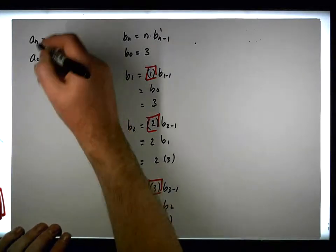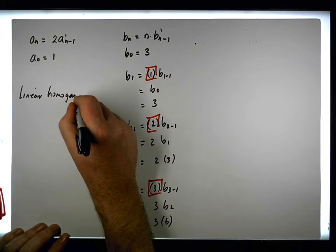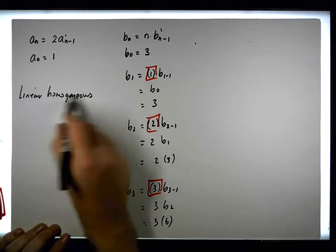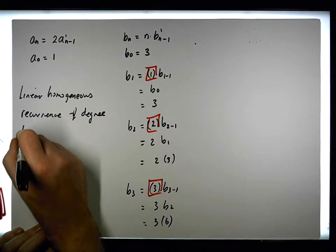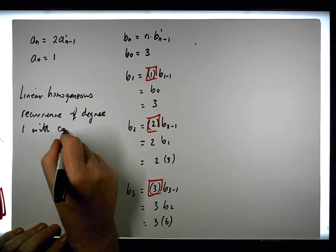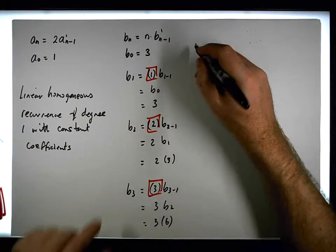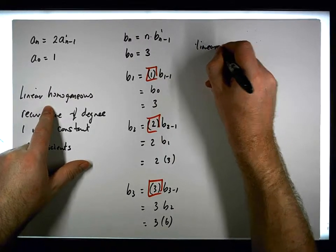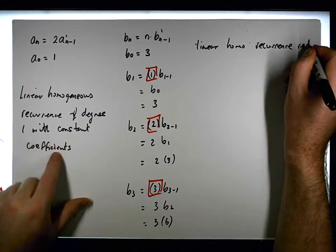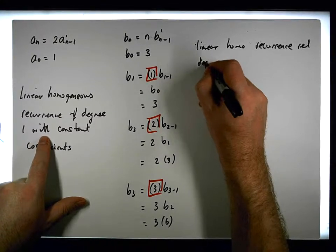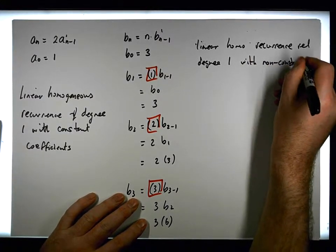So this recurrence is a linear homogeneous recurrence of degree one with non-constant coefficients, since we only go back one term.